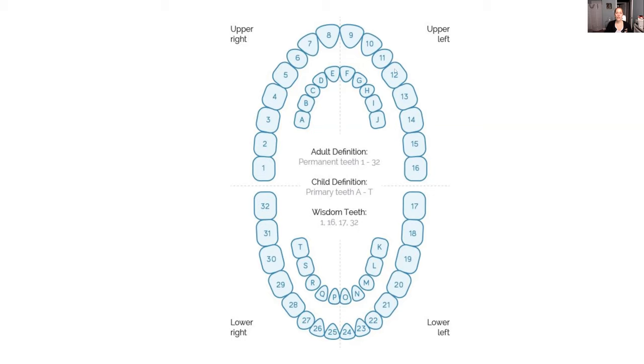And then for quad two, we start from the molars again. So this would be the 2-8, 2-7, 2-6, 2-5, 2-4, 2-3, 2-2, and 2-1.